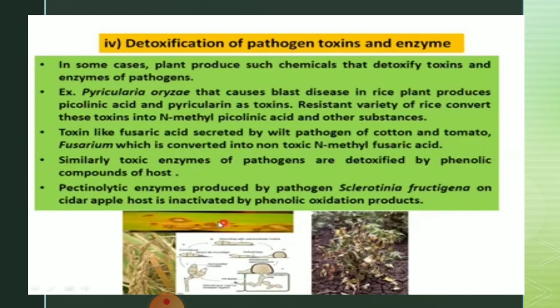Detoxification of pathogen toxins and enzymes: in some cases plants produce chemicals that detoxify toxins and enzymes of the pathogen. For example, Pyricularia oryzae, which causes blast disease in rice, produces picolinic acid and pyricularin as toxins. Resistant varieties of rice convert these toxins into N-methyl picolinic acid and other substances.